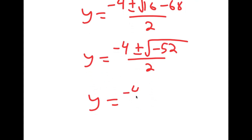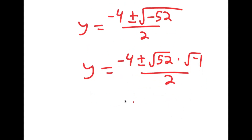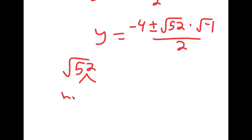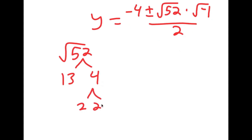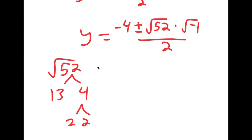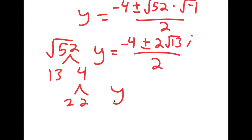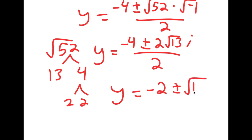This equals (−4 ± √52 · √(−1)) / 2. The square root of 52 simplifies to 2√13, since 52 = 13 × 4. So y equals (−4 ± 2√13 · i) / 2, which simplifies to y equals −2 ± √13 · i.